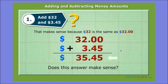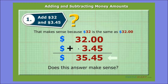Adding vertically starting from the right: zero plus five is five, zero plus four is four — bring down that decimal point, do not lose track of it — three plus two is five, and three plus nothing is three. So the sum of thirty-two dollars and three dollars and forty-five cents is thirty-five dollars and forty-five cents.